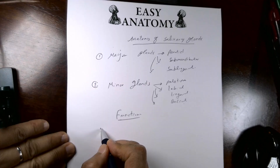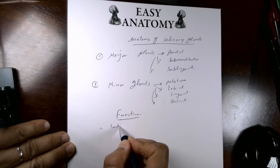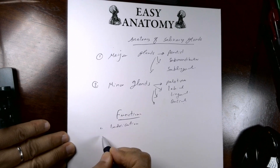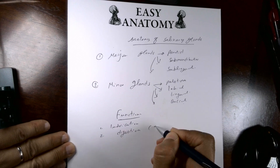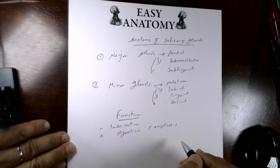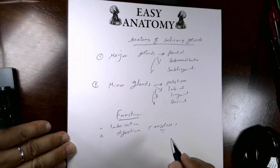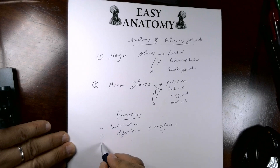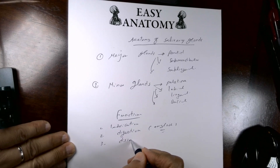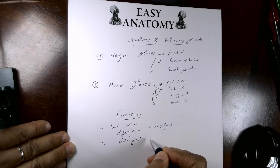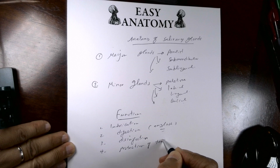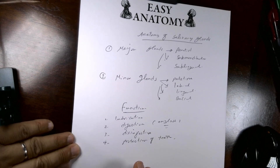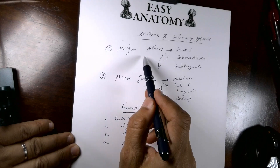The functions of salivary glands include lubrication, digestion via enzymes like amylase secreted in salivary secretion, anti-infection properties, and protection of teeth. These are the major functions of salivary glands.